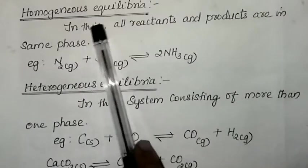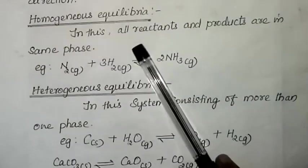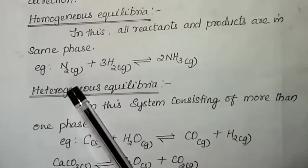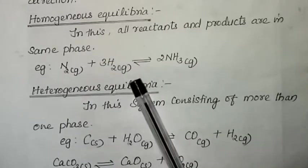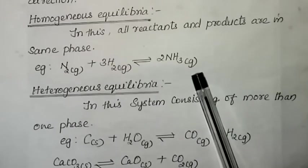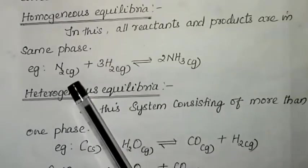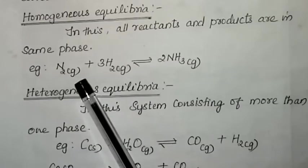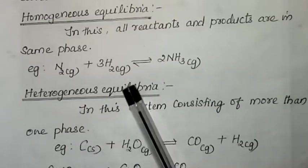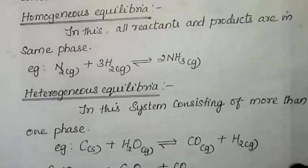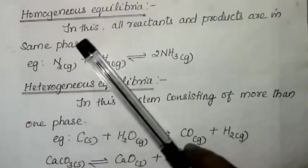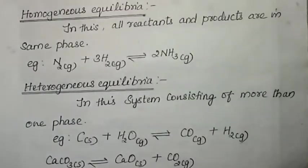Homogeneous equilibrium: in this type, all reactants and products are in the same phase. For example, N₂ gas + 3H₂ gas reversibly gives 2NH₃ gas. Here all reacting species — nitrogen, hydrogen, and ammonia — are in the gaseous phase. Such equilibrium is known as homogeneous equilibrium.